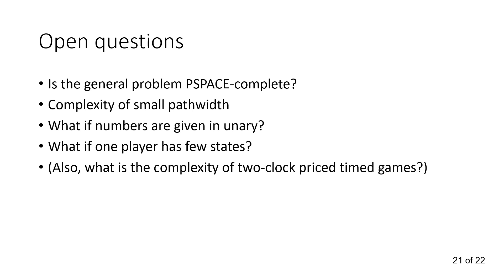So another question could be what if the numbers in input are given in unary? Our construction has exponentially growing costs on the edges. Are they easier if you have only small numbers? And, as mentioned, it's also the case. What if one player has only few states? We don't really know anything about that one. It could be easy. It could be hard. We don't know. A final question I put in parenthesis here because I haven't defined what two-clock priced timed games are. But what is the complexity of that one? The three-clock variant or more clocks variant is known to be undecidable. But two is still open. One could work on that one as well.